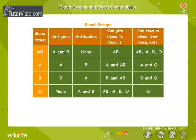The blood group testing is based on the property that in any individual, the antigens and antibodies are never the same, because antibody A agglutinates antigen A. Similarly, antibody B agglutinates antigen B.